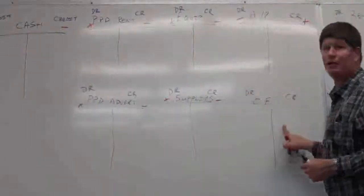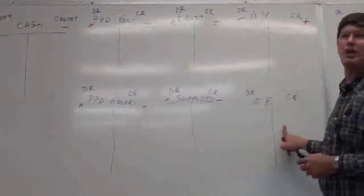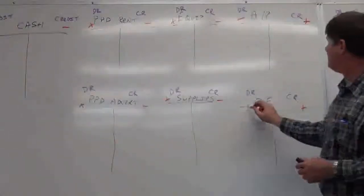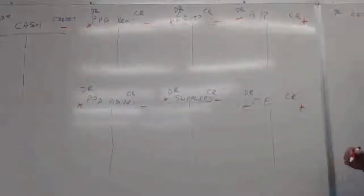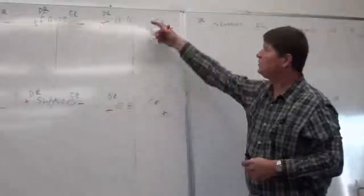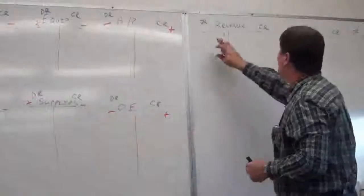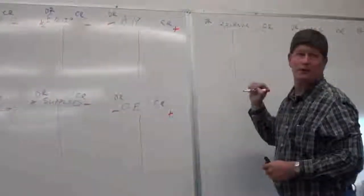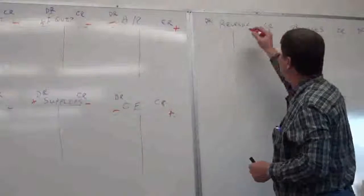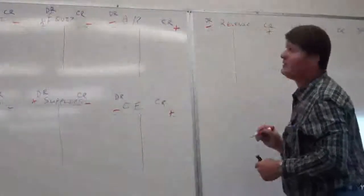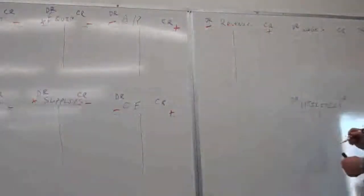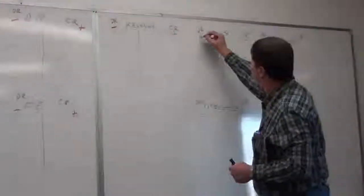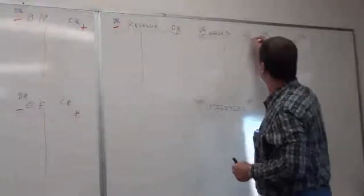Owner's equity increases on the credit side and decreases on the debit side, just like your liabilities. Revenue increases on the credit side, decreases on the debit side. All of your expenses increase on the debit side, decrease on the credit side.